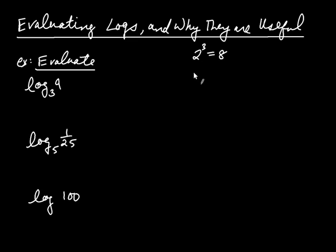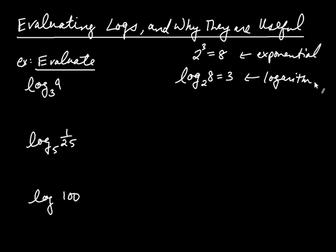Now, that same information could be told to you in the following way: log base 2 of 8 is equal to 3. So the first equation is called the exponential form, and we're familiar with exponential forms. The second equation is what's called the logarithmic form. And you might say, well, what does it mean? And the answer is these mean the same thing. These are equivalent. Here the information is given to you exponentially. Here the information is given to you logarithmically.